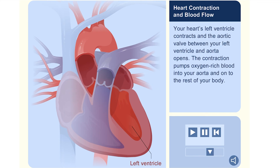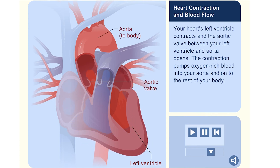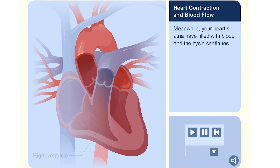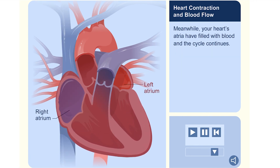Your heart's left ventricle contracts and the aortic valve between your left ventricle and aorta opens. The contraction pumps oxygen-rich blood into your aorta and onto the rest of your body. The aortic valve quickly closes to prevent blood from flowing back into the left ventricle. This occurs at the same time a new contraction is taking place in your heart's right ventricle. Meanwhile, your heart's atria have filled with blood and the cycle continues.